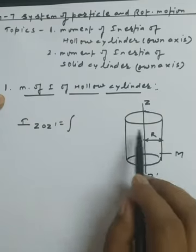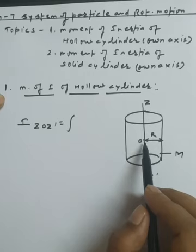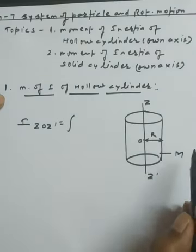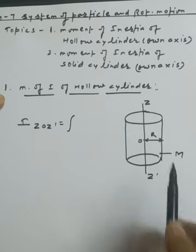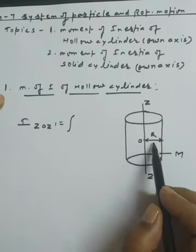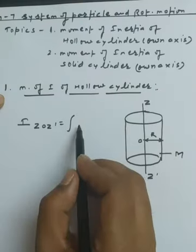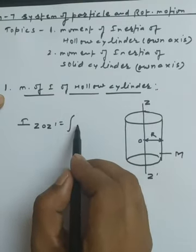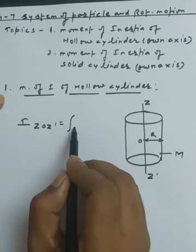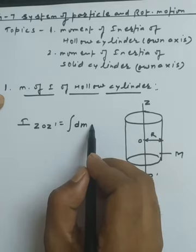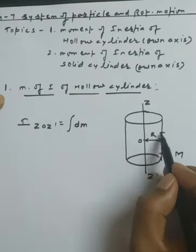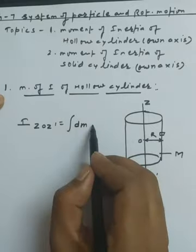For the hollow cylinder, we assume the whole mass is uniformly distributed at distance R from its axis. The total mass of the cylinder is capital M, which is composed of a number of small masses. R is the radius of the hollow cylinder, and since R is constant, we consider a small mass element dm situated at distance R from the axis.